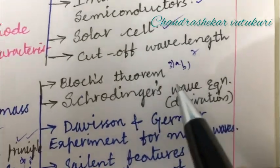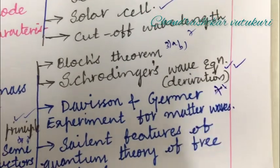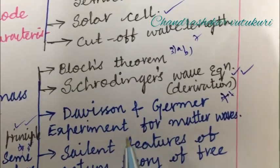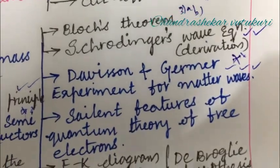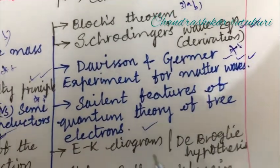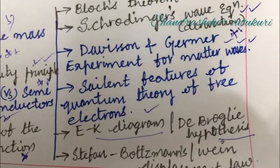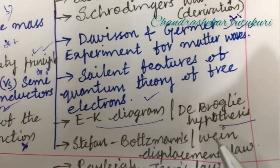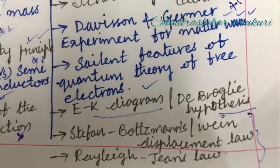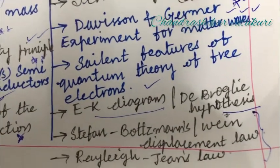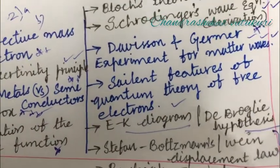Later, the third question is all about Bloch's theorem, Schrödinger wave equation, and the derivation is a gun shot short question. Davisson and Germer experiment for matter waves is also a repeated and topmost question. Salient features of the quantum theory of free electrons, E-k diagram is a short question. De Broglie hypothesis is also an important question. Stefan-Boltzmann as well as Wien's displacement law and Rayleigh-Jeans law—from these three laws you may get differences in short or long questions. These are very important questions. Without skipping a single part, you are supposed to focus on each and every parameter I have highlighted.